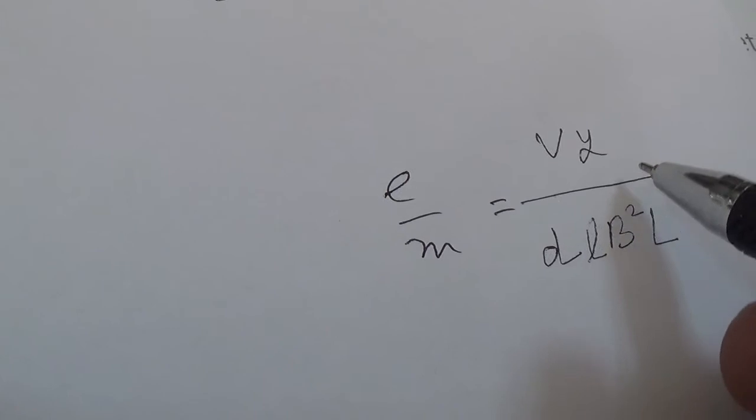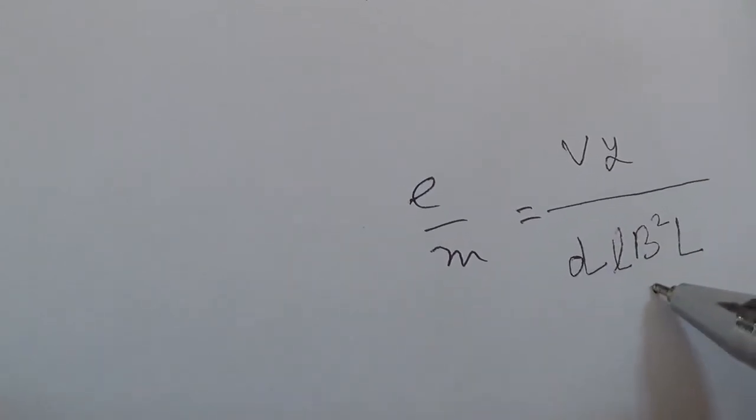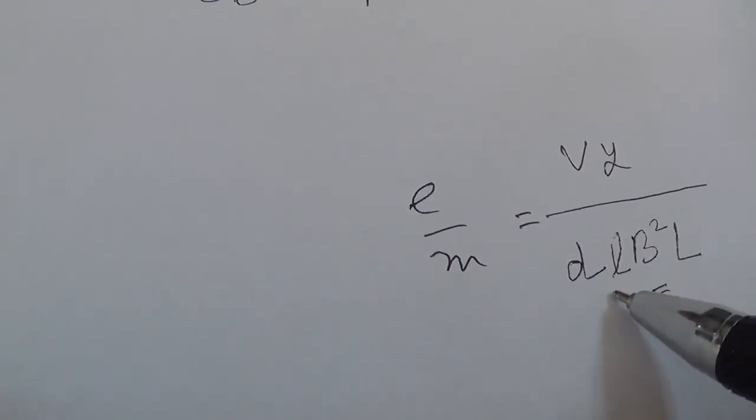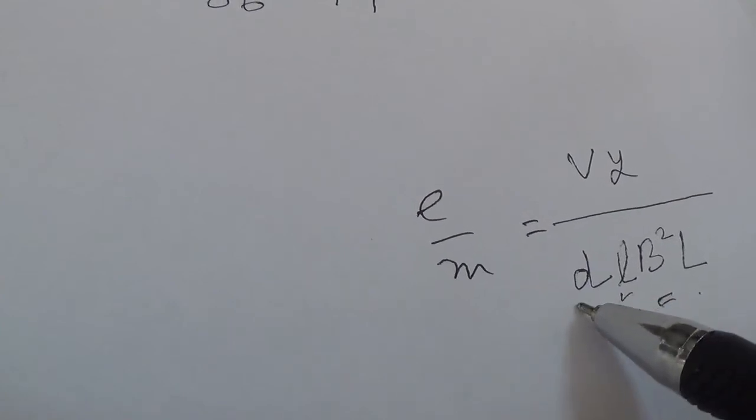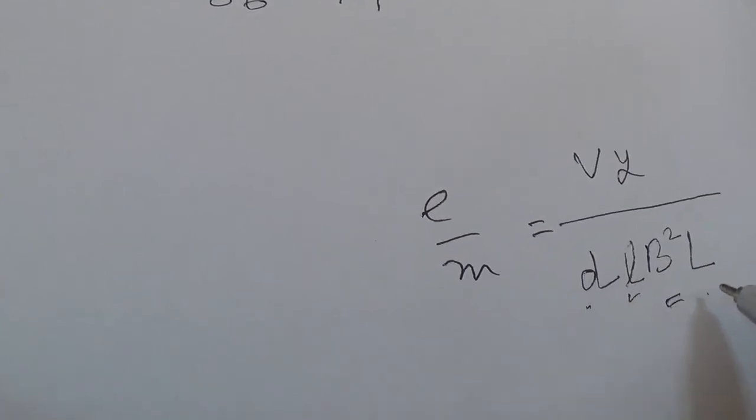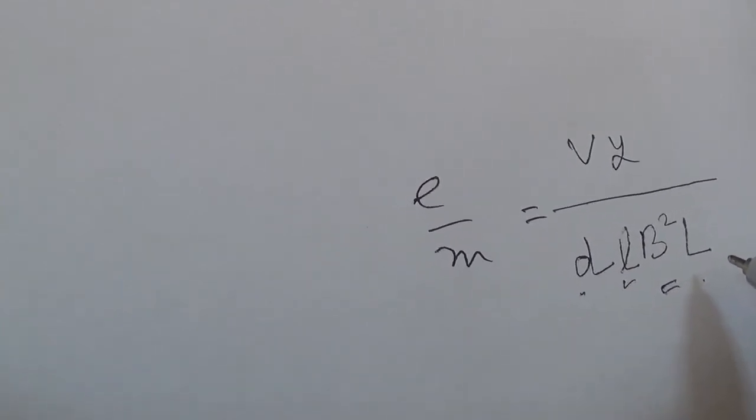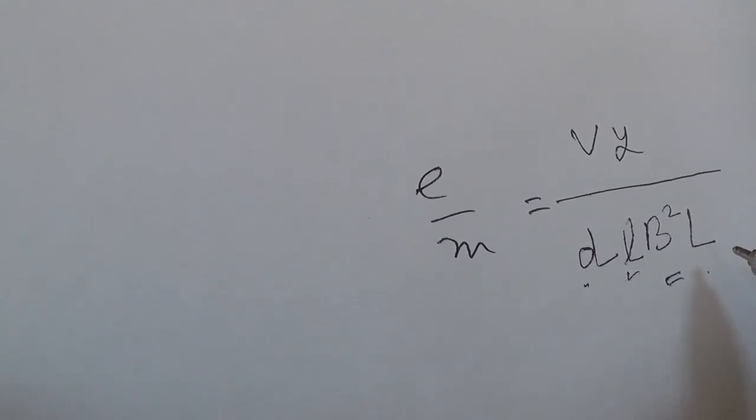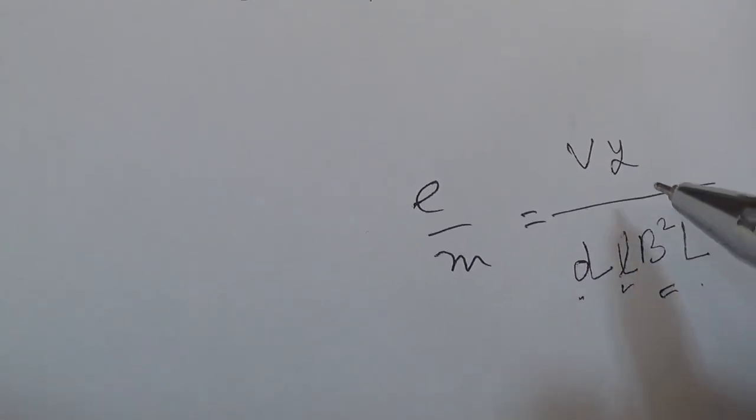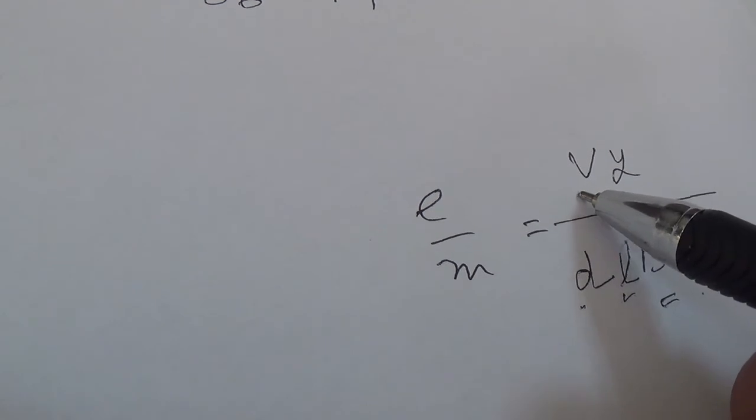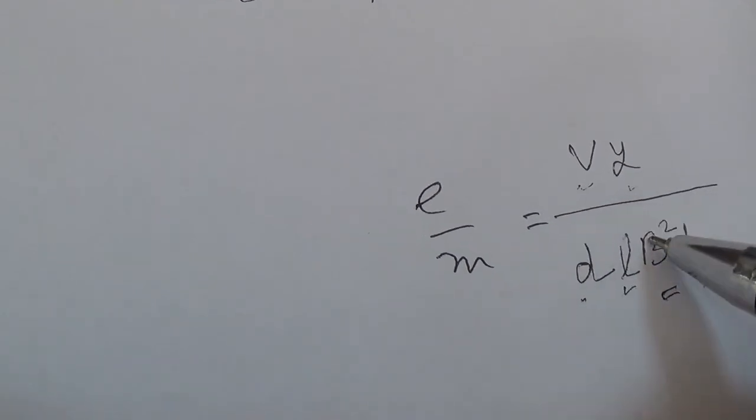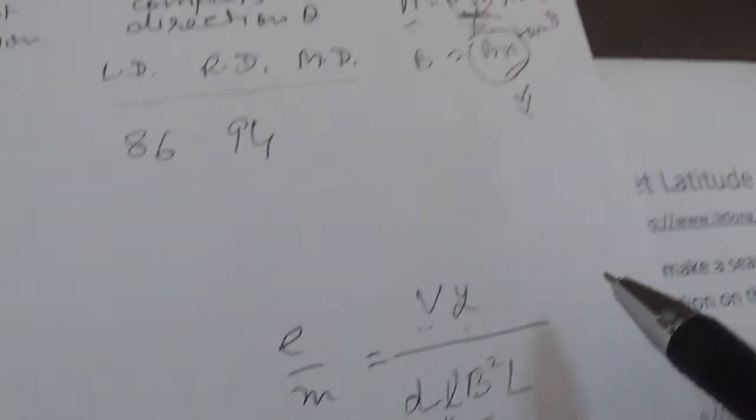So we put all these values, and here this small l, capital L, and small d is given by the manual. That comes under the specification of the cathode ray tube. But we have to measure this Vy and B.